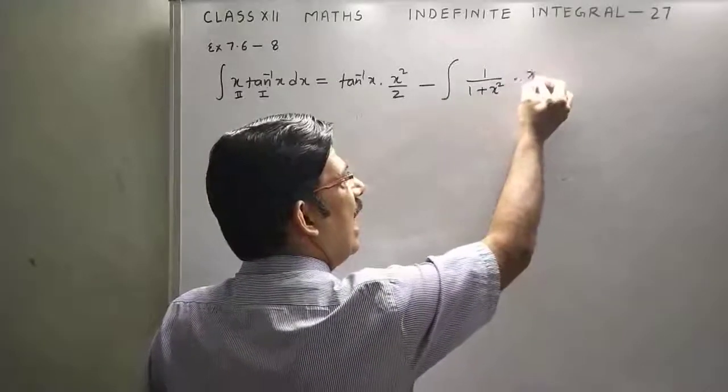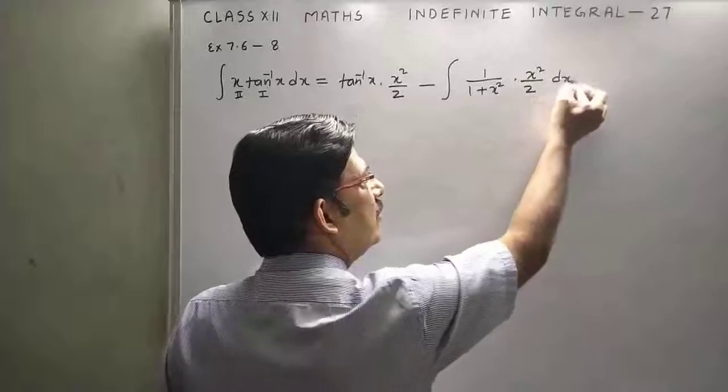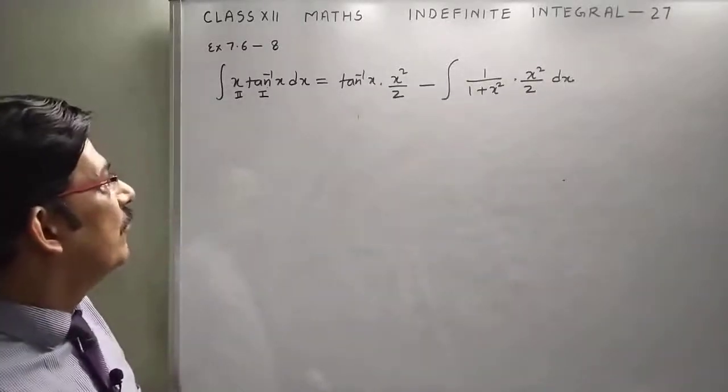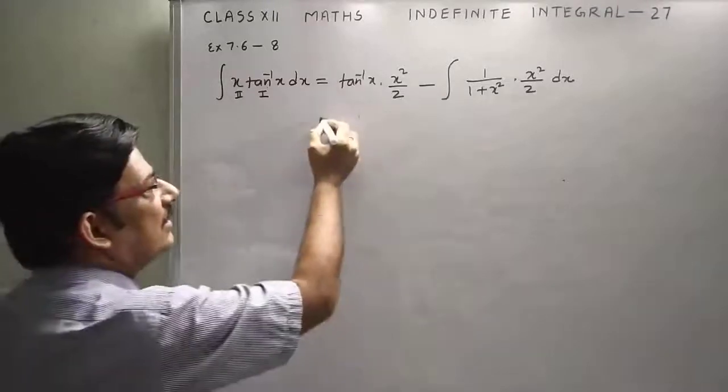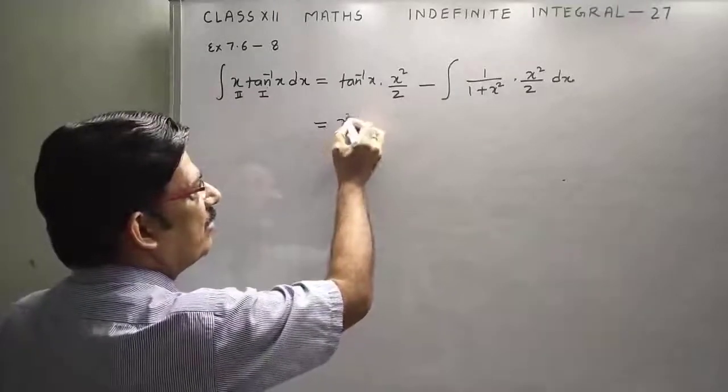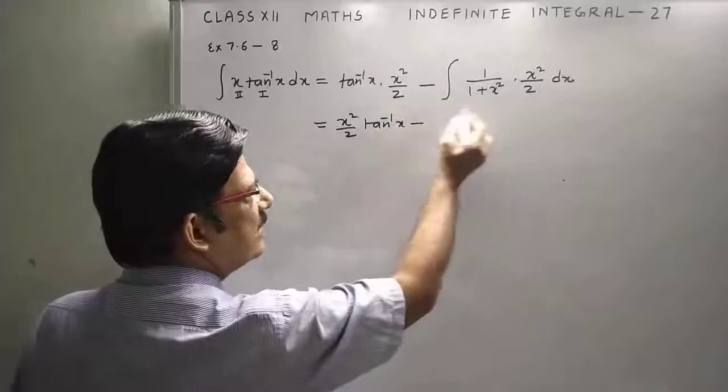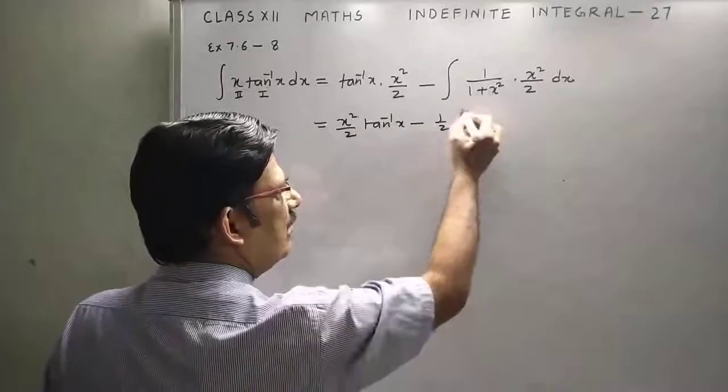And integration of X means X square upon 2 DX. So we have applied the integration formula by parts. Now this is X square upon 2 tan inverse X minus you can take 1 by 2 outside.